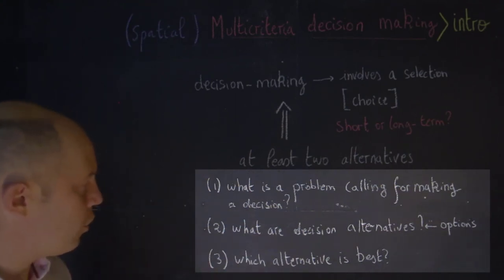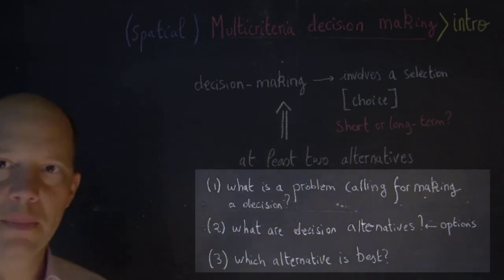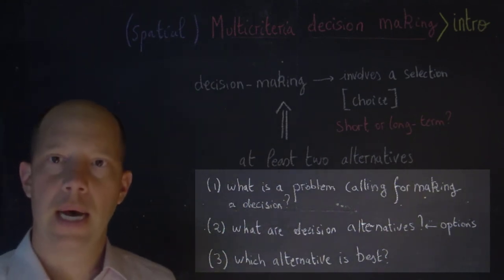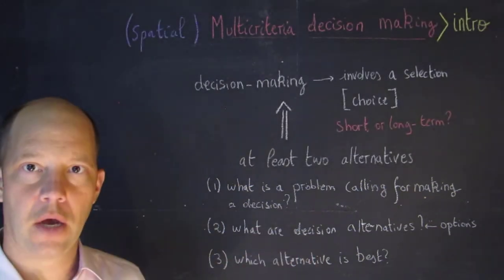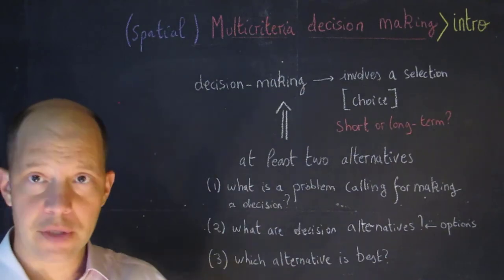The third one is which alternative is the best. To answer the third one, typically we have different attributes that we are going to weigh until we find a solution that fits our preference or belief.